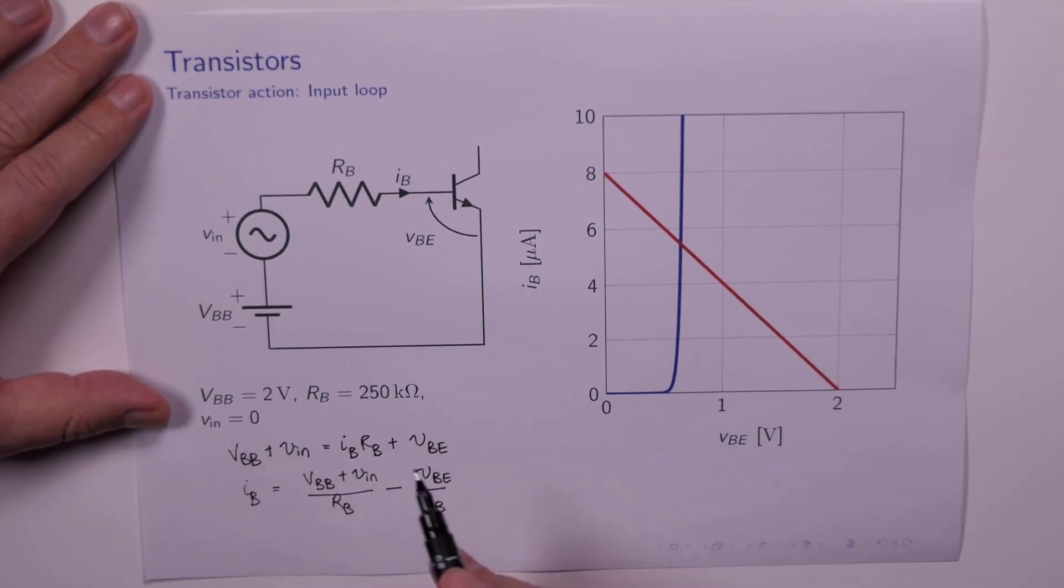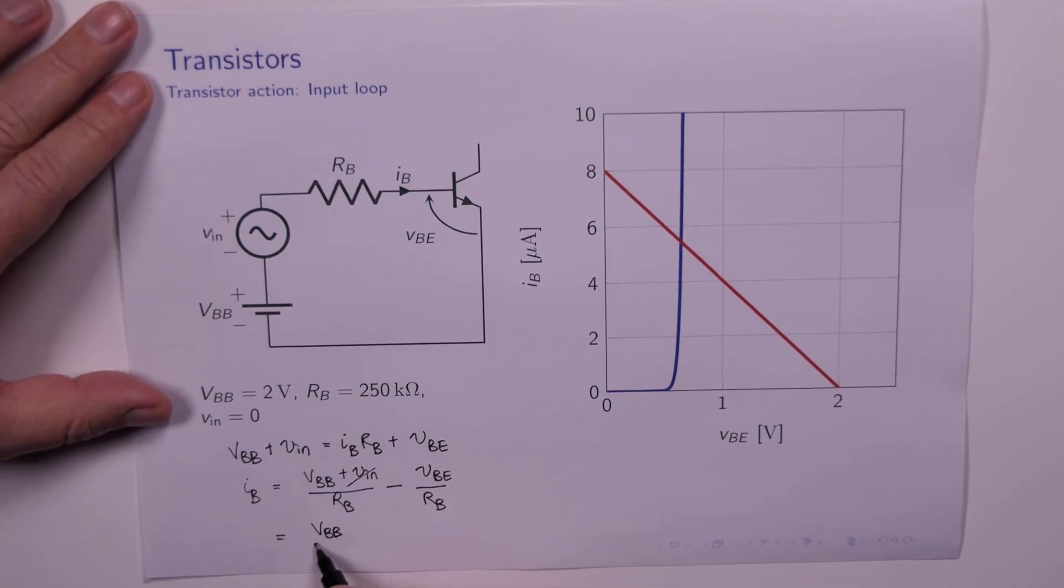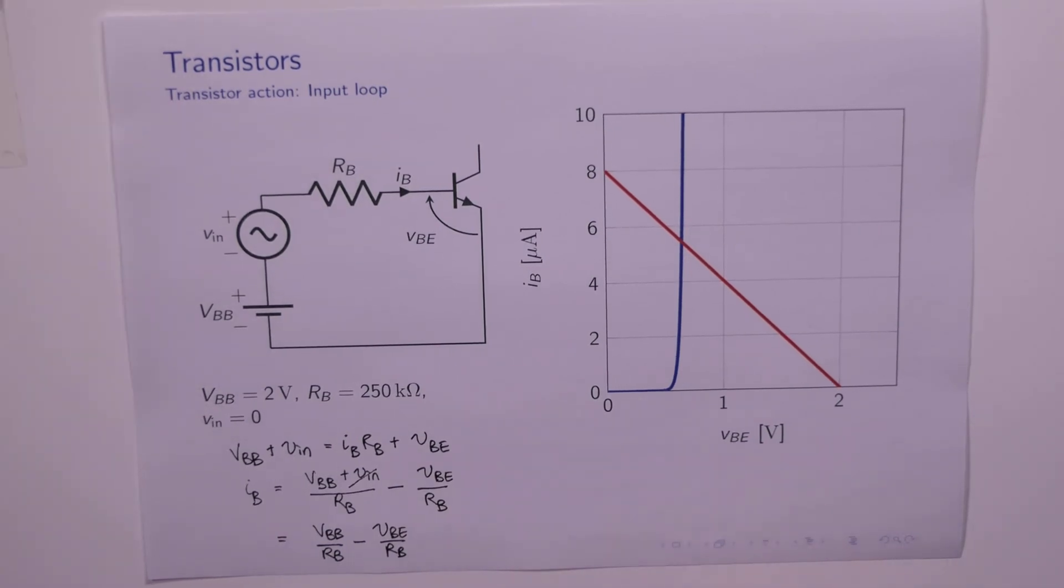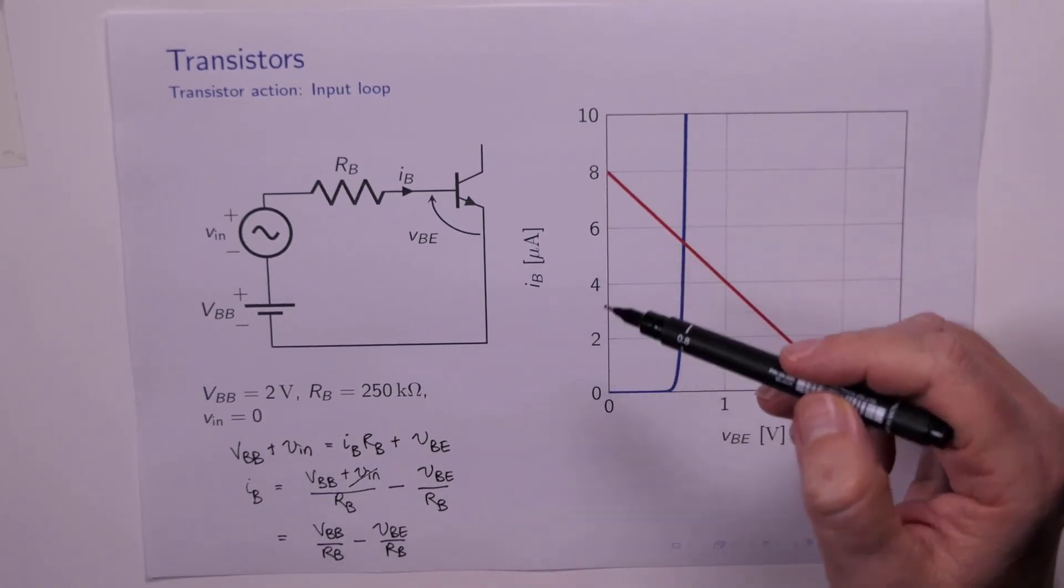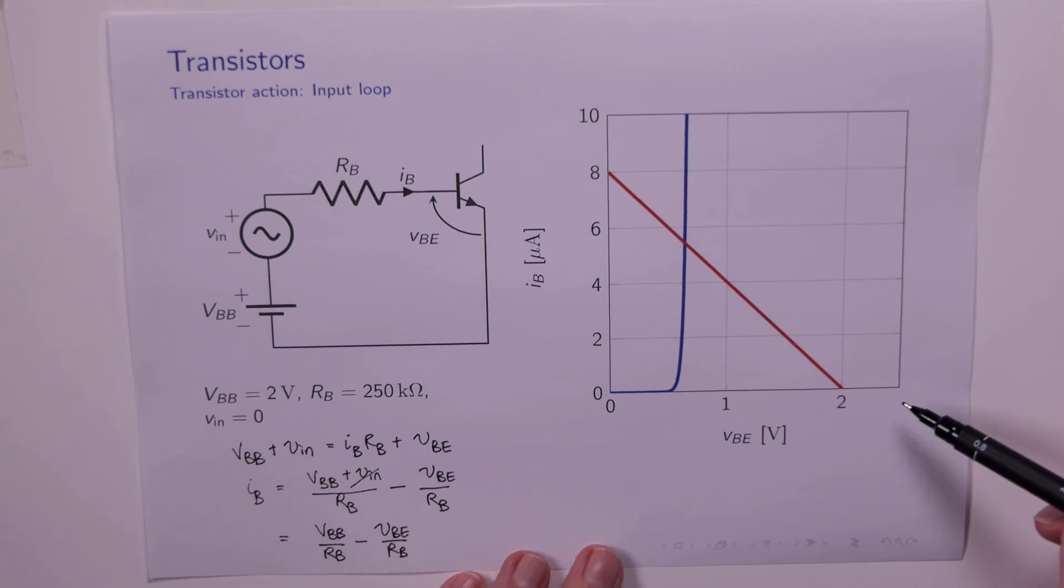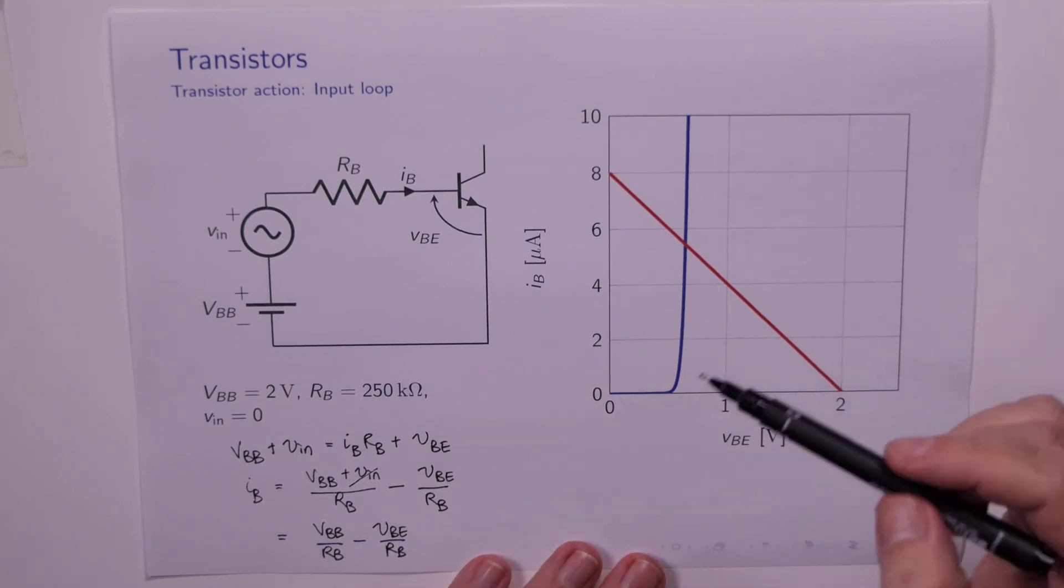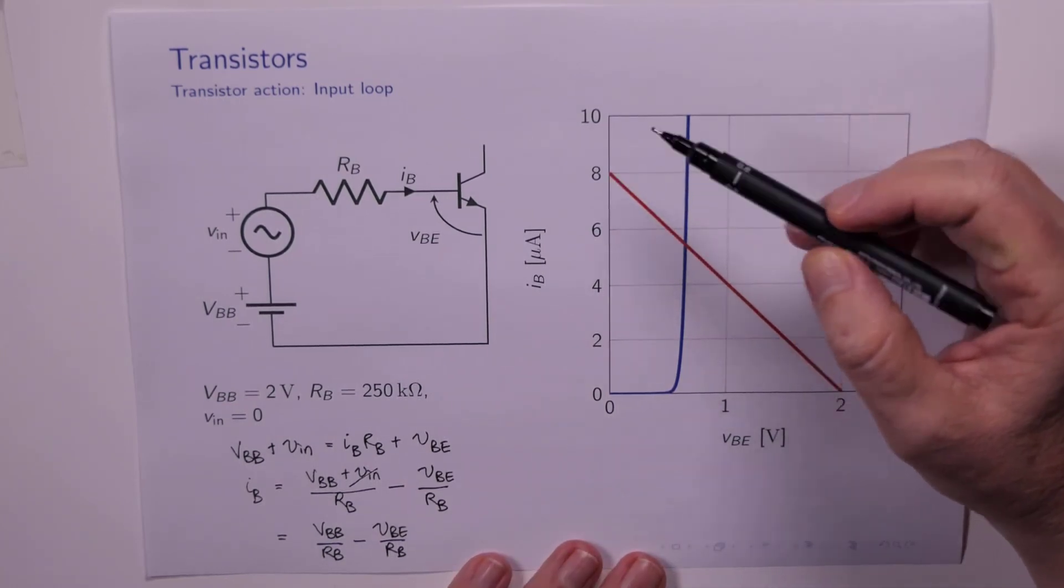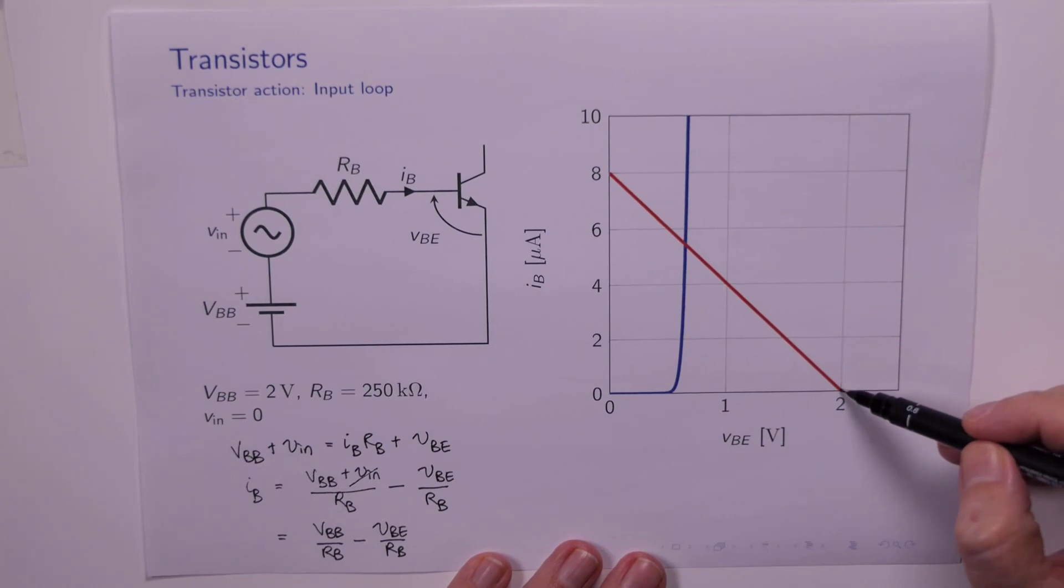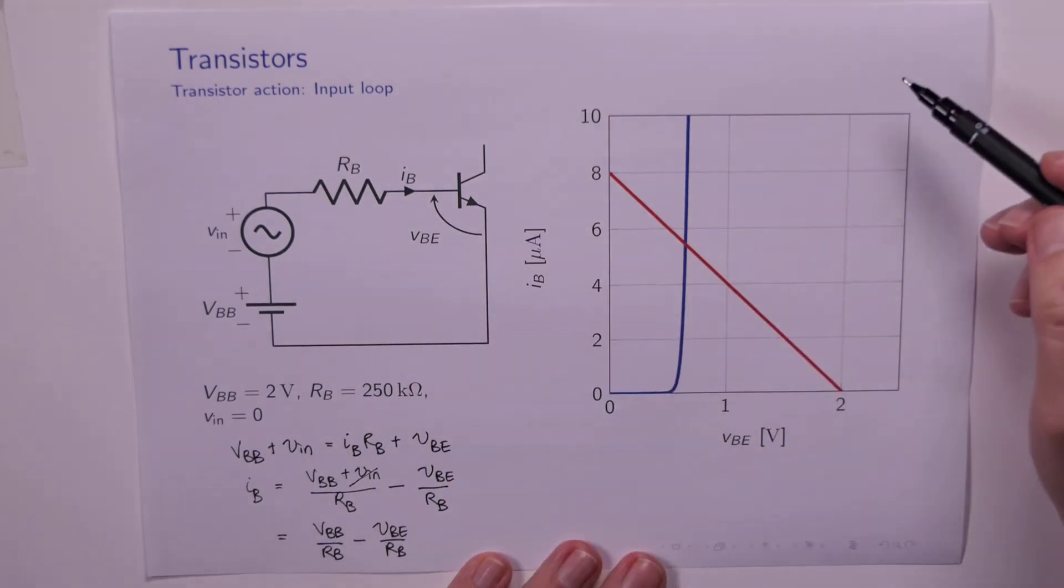Now VIN is equal to 0, so that doesn't appear, so we end up with VBB over RB. So here's our straight line equation involving the base current which is on the vertical axis and VBE which is the horizontal axis. When we plug in the values VBB over RB and so on, we discover that the intercepts are 8 microamps and 2 volts. So this is the load line for the input loop when VIN is equal to 0.